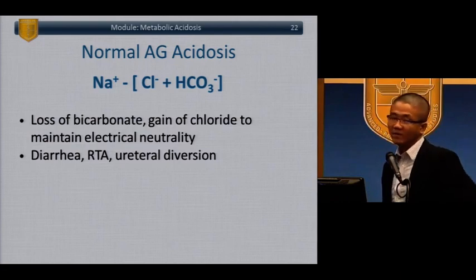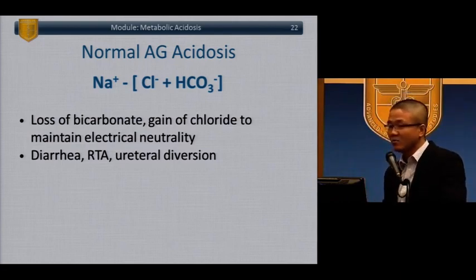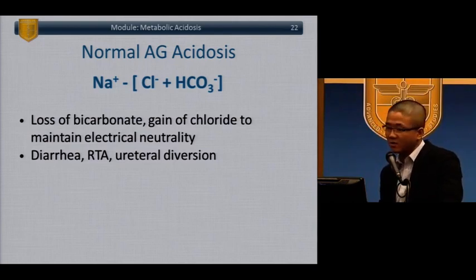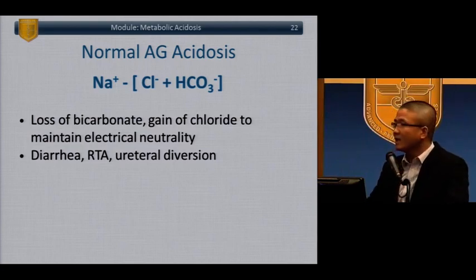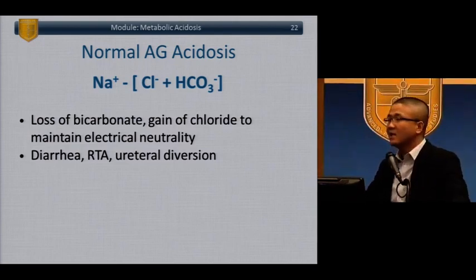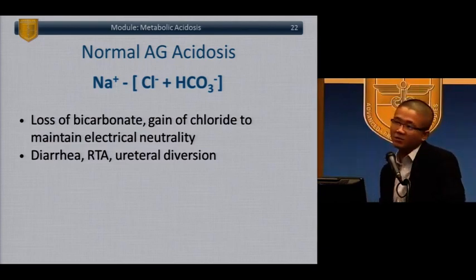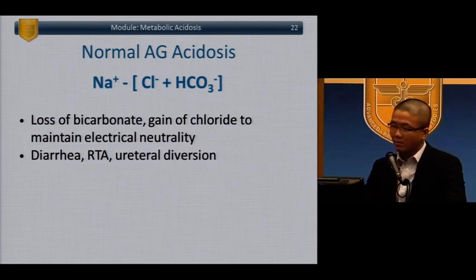When you have a normal anion gap acidosis, these are the renal tubular acidosis patients and the diarrhea patients. They have normal anion gaps because for the major anions and cations we measure, there is equal loss and gain — your loss of bicarb is matched by a gain of chloride, maintaining electrical neutrality, but it doesn't demonstrate itself as an increase in the anion gap.